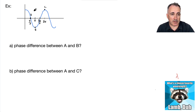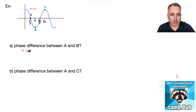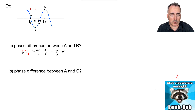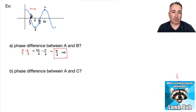What's the phase difference between A and B? That's the distance from A to B. B is at pi, and A is at pi over two. To subtract, I need a common denominator: pi becomes two pi over two. So two pi over two minus one pi over two equals one pi over two. The phase difference between A and B is pi over two radians — which is one quarter of the whole cycle.